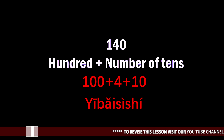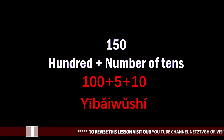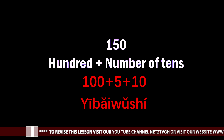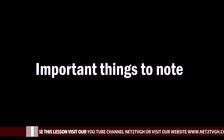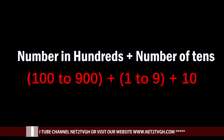What is 150? 100 plus five plus ten — 100 is 'yi bai,' five is 'wu' — so 'yi bai wu shi.' The formula to derive 110 through 190 is: you take 100 plus the number of tens.